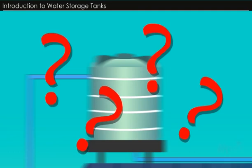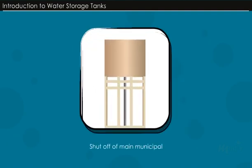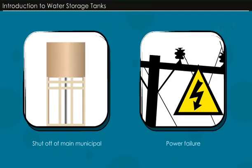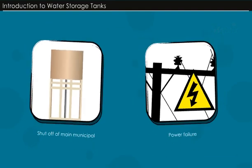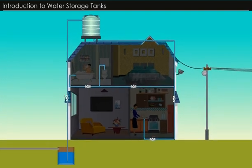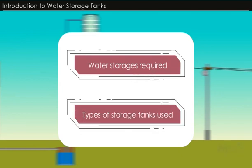Do you know why? Because it ensures uninterrupted water supply in the building in case the main municipal water supply is shut off for repairs, or if there is a power failure. It may also help to supplement the direct municipal supply in case of excess or peak demand. Let us discuss the types of water storages required and different types of storage tanks used in domestic buildings.